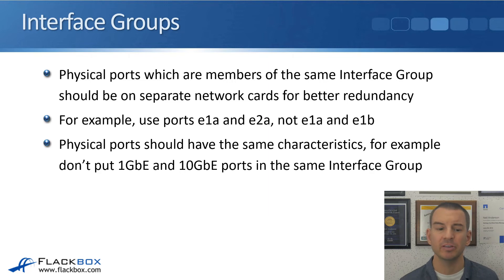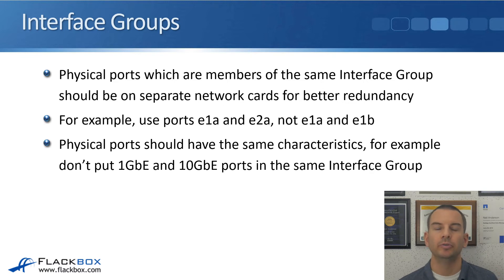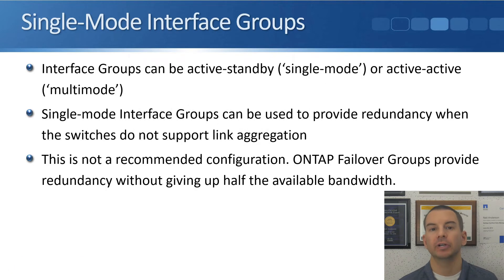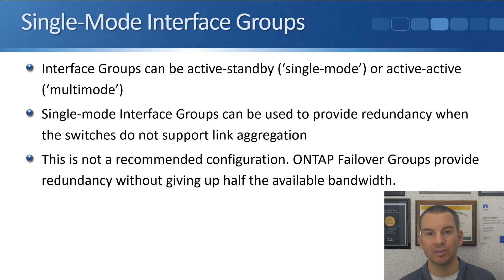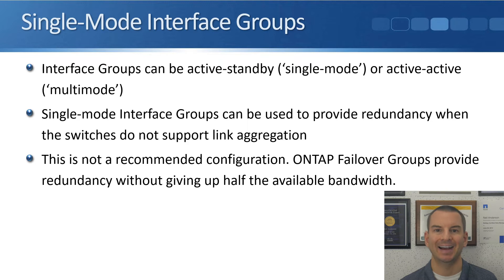The physical ports should have exactly the same characteristics — for example, don't put 1 gigabit and 10 gigabit Ethernet ports into the same interface group. For interface groups, there are a couple of configuration options: single mode, which is active-standby, or multi-mode, which is active-active. Single mode interface groups provide redundancy but no load balancing when switches do not support link aggregation.